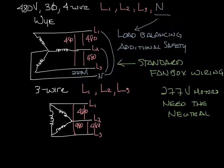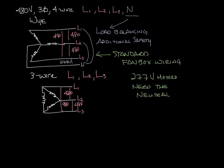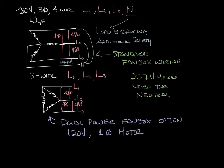Now let's say you wanted a 277-volt motor and a 480-volt electric heater on a 3-wire system. Make a little room. So what you get here is a dual power fan box. You would have line voltage for a 120-volt single-phase motor. And then you would have 480 volts for your electric heaters.